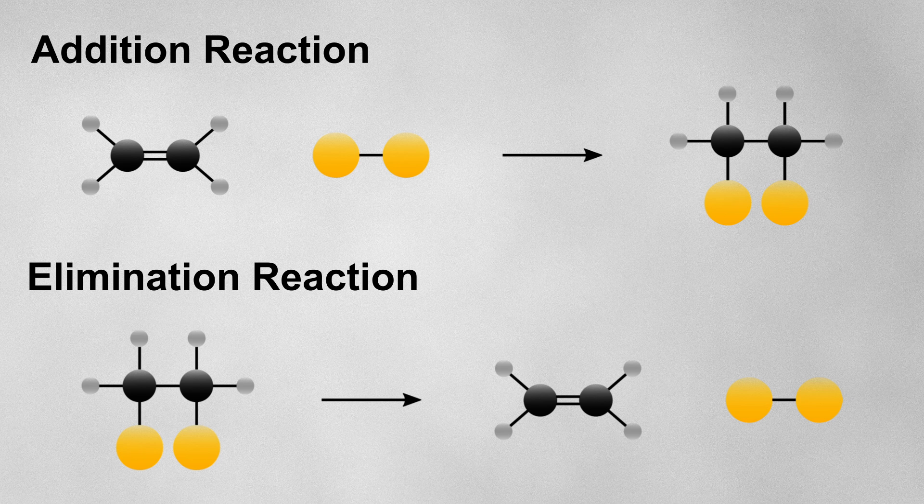There are two main mechanisms for an elimination reaction, E1 and E2. Just like the SN1 and SN2 mechanisms, the numbers here represent the number of reactants involved in the rate determining step.